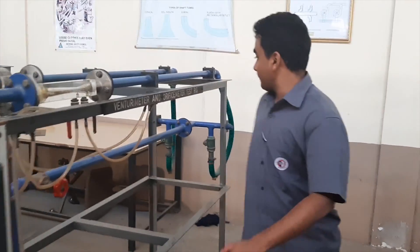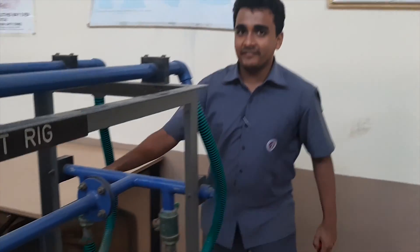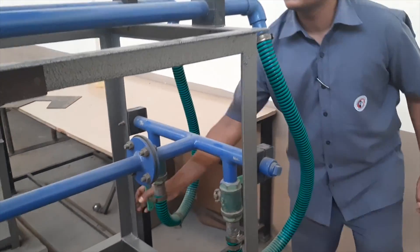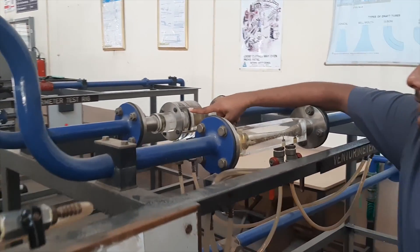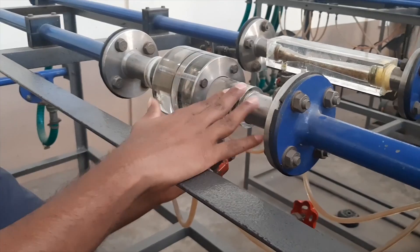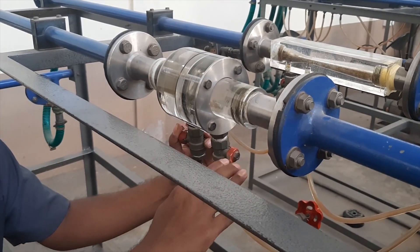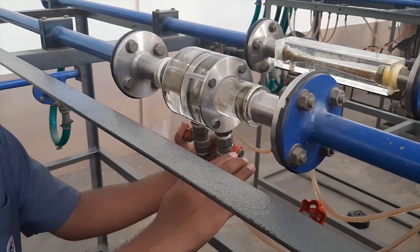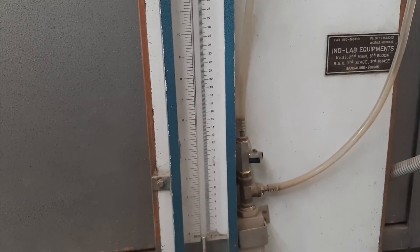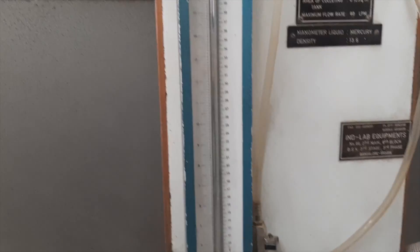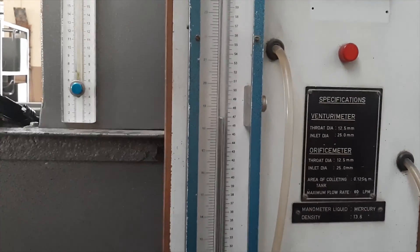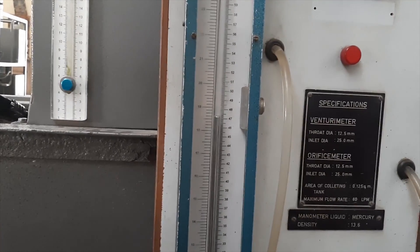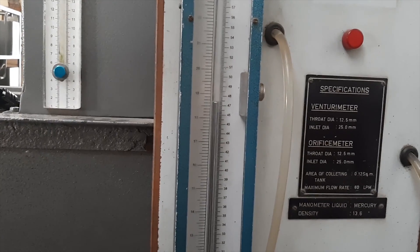Now once the switch is turned on, the orifice meter valve is opened. The water then starts flowing through the orifice meter. This is the valve which is opened for finding the head loss of an orifice meter. You can see there is rising mercury level in the manometer. The reading is noted.